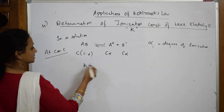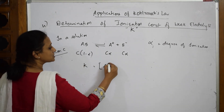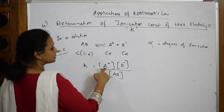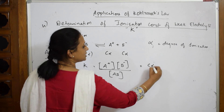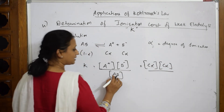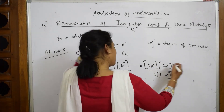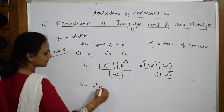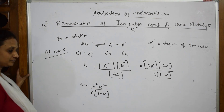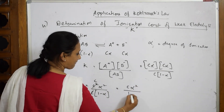The equilibrium constant K is products over reactants: K = [A⁺][B⁻] / [AB] = (cα)(cα) / c(1−α) = c²α² / c(1−α). Cancelling one factor of c gives the final expression: K = cα² / (1 − α).